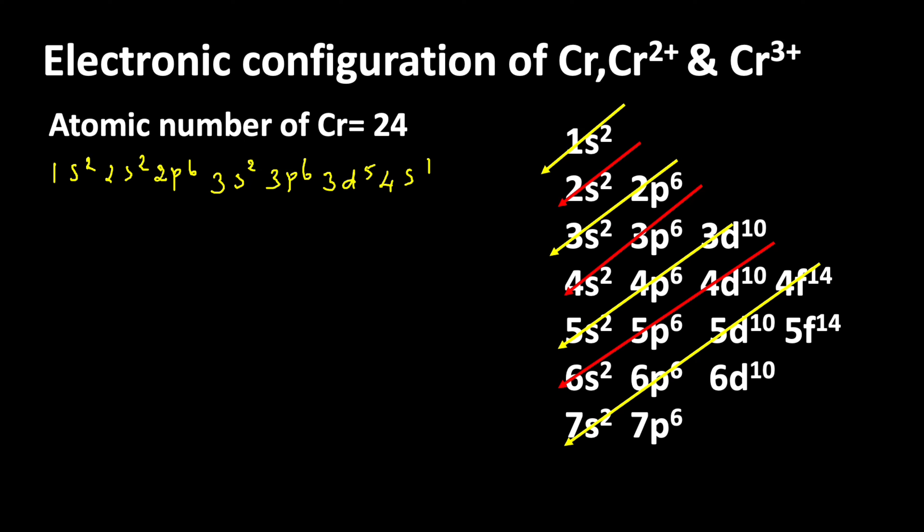Now we will write the electronic configuration of Cr²⁺. Cr²⁺ is formed when two electrons are lost from chromium, so it has 22 electrons. The configuration is 1s² 2s² 2p⁶ 3s² 3p⁶ 3d⁴. The two electrons are lost from the 4s orbital and one from the 3d orbital.